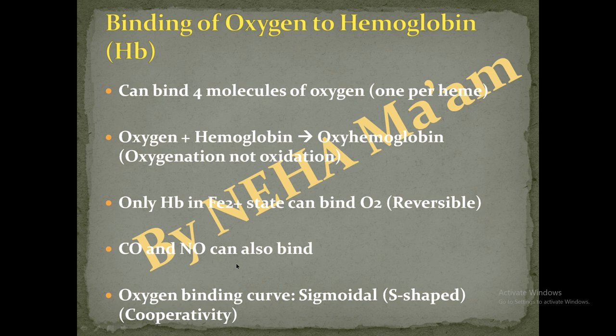The oxygen binding curve for hemoglobin is sigmoidal, meaning it is S-shaped, and this shows cooperativity. When one oxygen molecule binds to hemoglobin, subsequent oxygen molecules also bind in a cooperative manner. This cooperative process does not occur in myoglobin, since myoglobin binds only one oxygen.